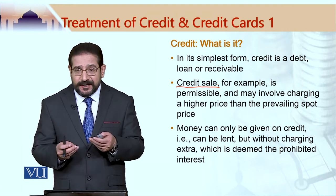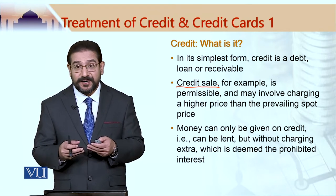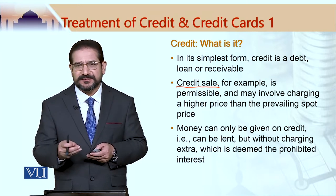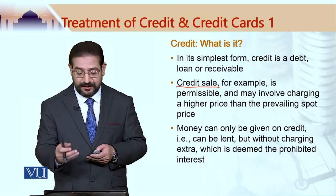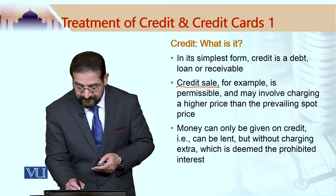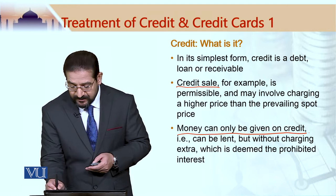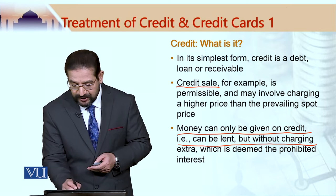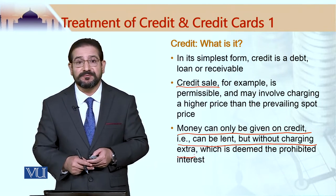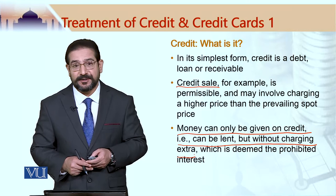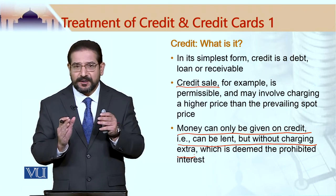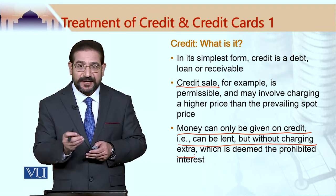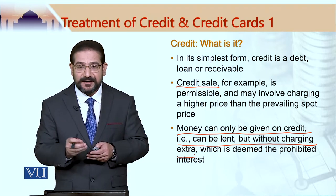While trade can take place — trade of commodities, goods and services — it can take place on the basis of credit sale. Money, however, can only be given on credit, i.e. lent, but without charging extra, which is deemed as prohibited interest. So this is a very clear difference in the treatment of credit sale and money on credit.